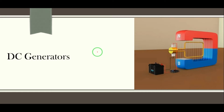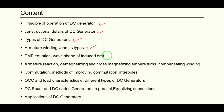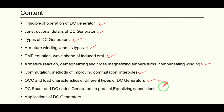In this lecture we will discuss DC generators. In this series we will learn the principle of operation of a DC generator, constructional details, types of DC generators, armature winding connections, how much EMF is generated, armature reaction effects, improvement methods, computation characteristics, parallel operation, and the applications of a DC generator.